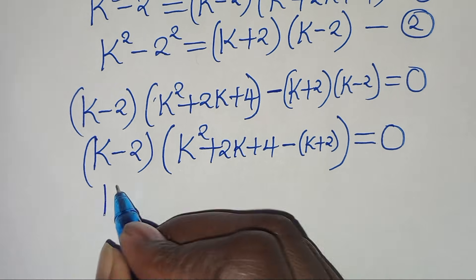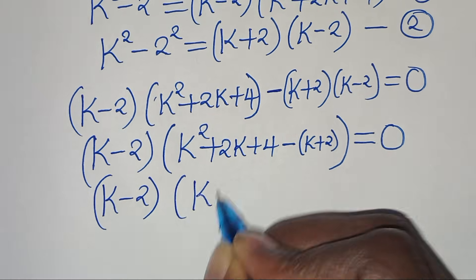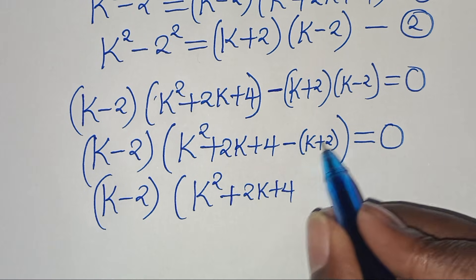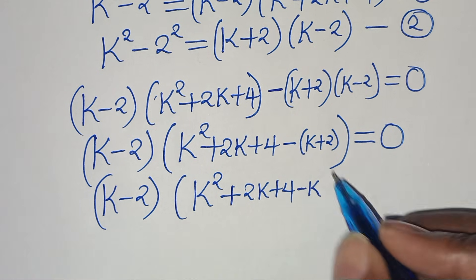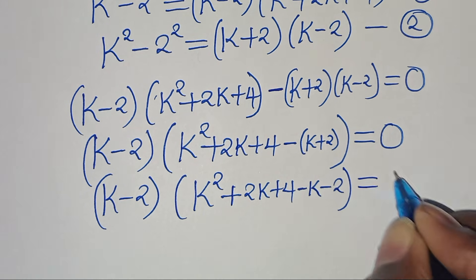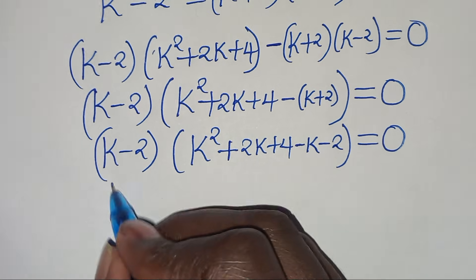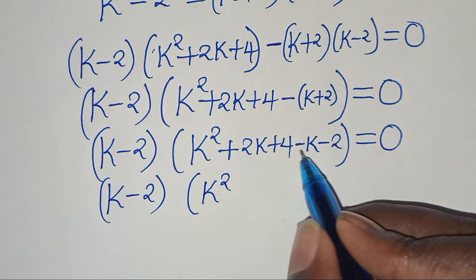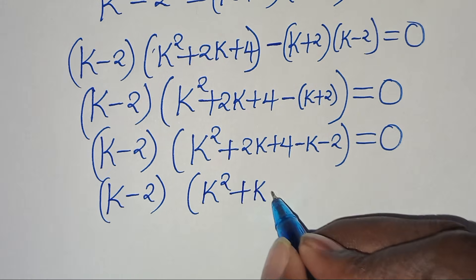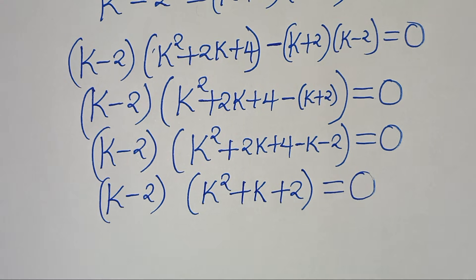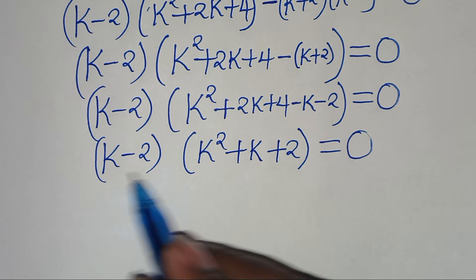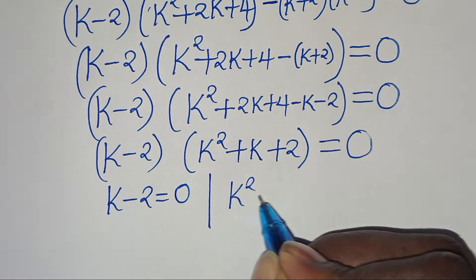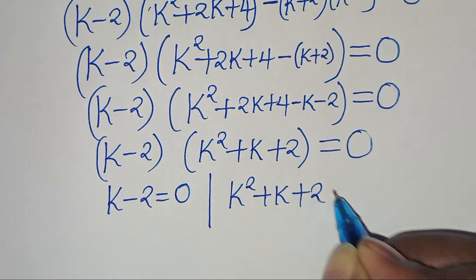Now, here we have (k minus 2) times the quantity k squared plus 2k plus 4. Let's open the parenthesis: minus times k is minus k, minus times 2 is minus 2. So this becomes (k minus 2) times (k squared plus 2k minus k plus 4 minus 2), which simplifies to (k minus 2)(k squared plus k plus 2), equal to 0.